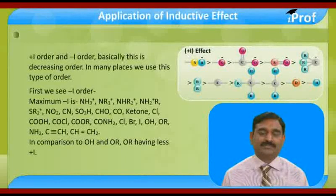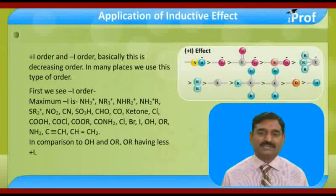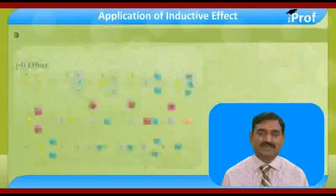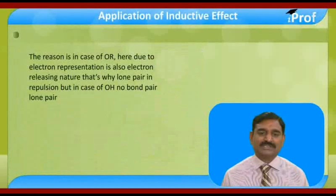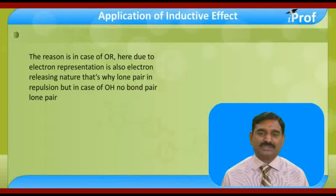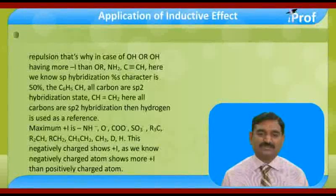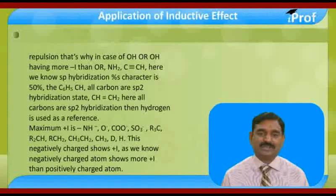Then COOH, COCl, COOR, CONH2, then Cl, Br, Iodine, then OH, OR. In comparison to OH and OR, OR has less plus-I. The reason is in the case of OR, due to electron repulsion, CH3 is also electron-releasing in nature. That's why here lone pair and bond pair repulsion occurs. But in the case of OH, no lone pair-bond pair repulsion. That's why OH has greater minus-I than OR. Then NH2.